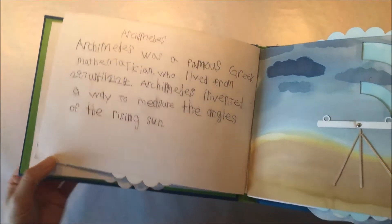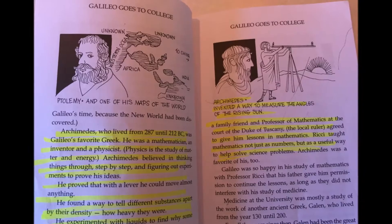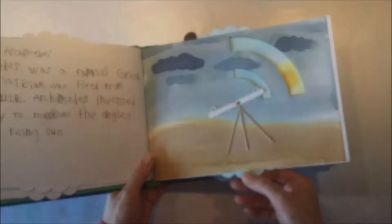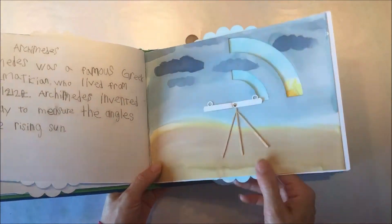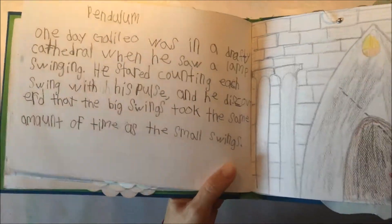So then next up, we have this special kind of telescope. It's not really a telescope, but it was invented by Archimedes to measure the ascension of the sun. And that was another little interactive element in the book.